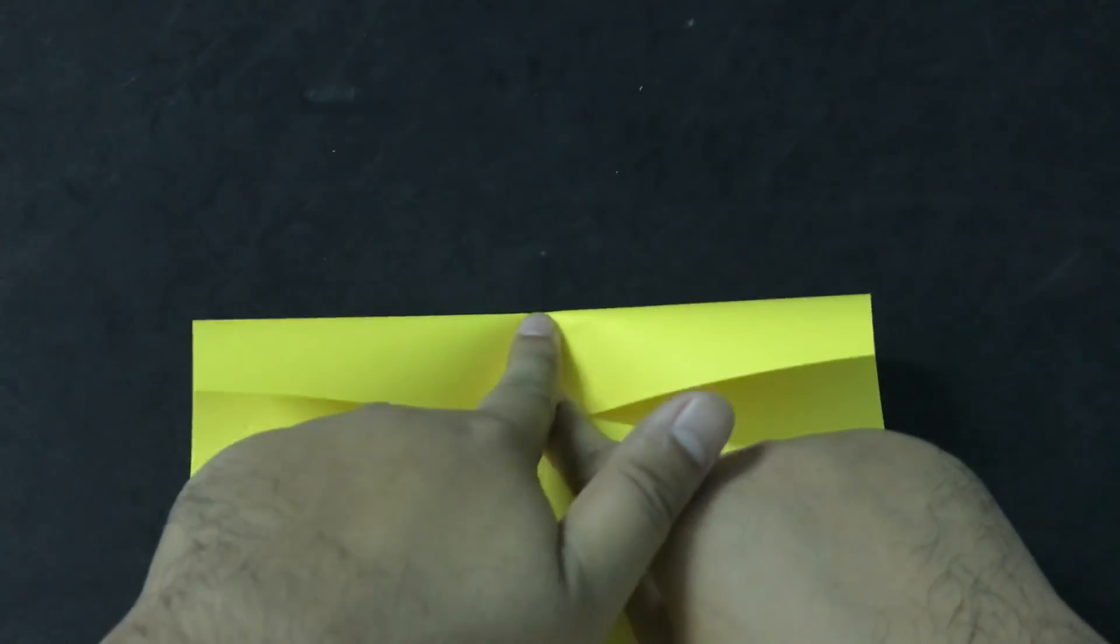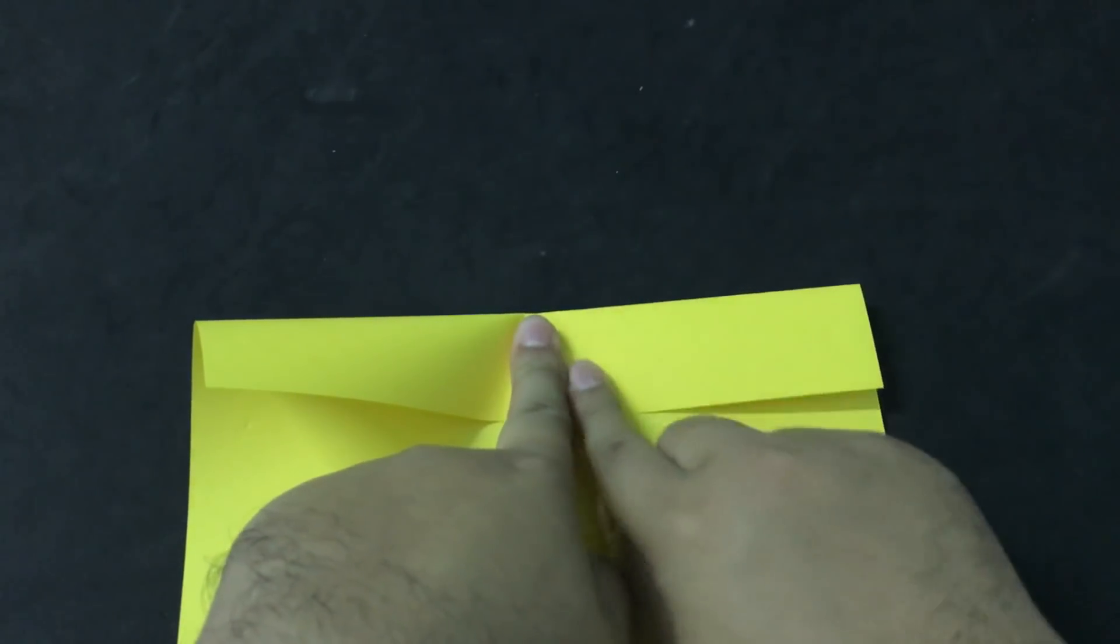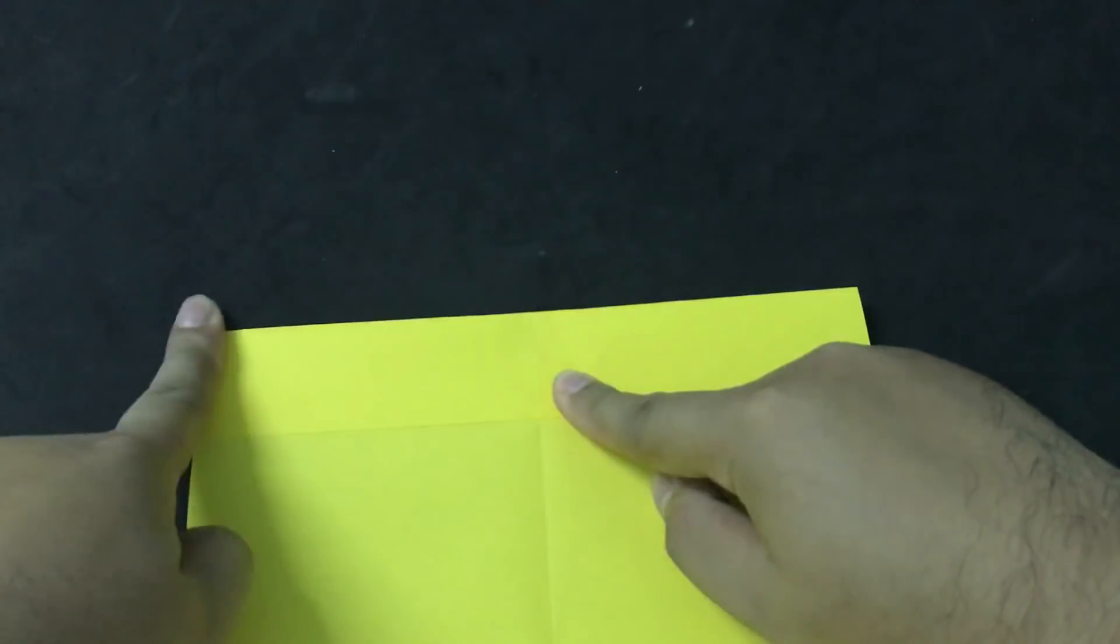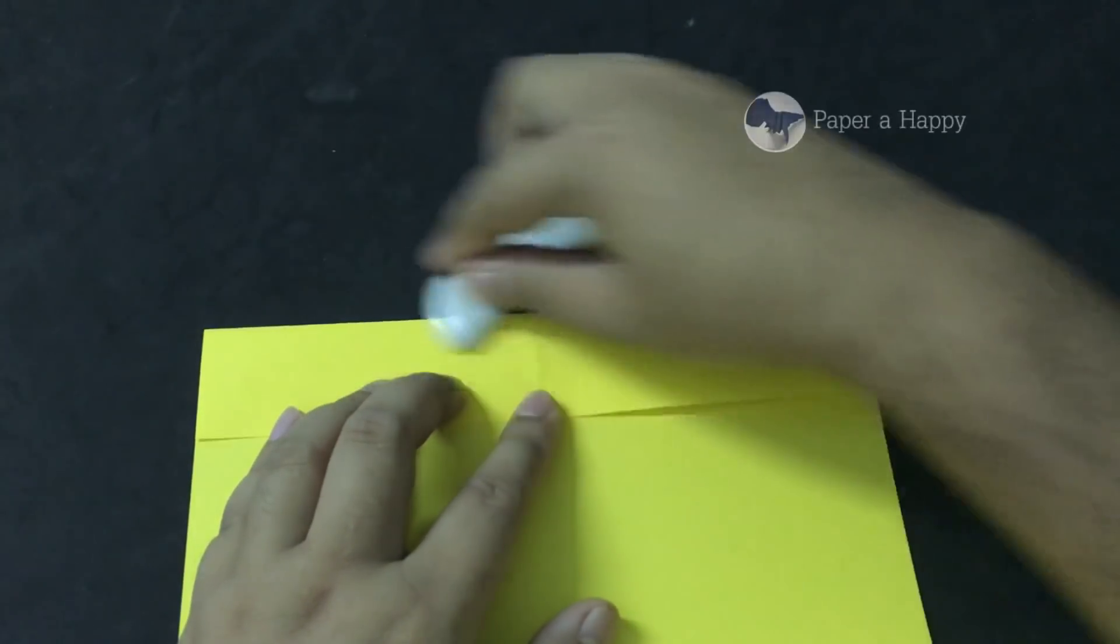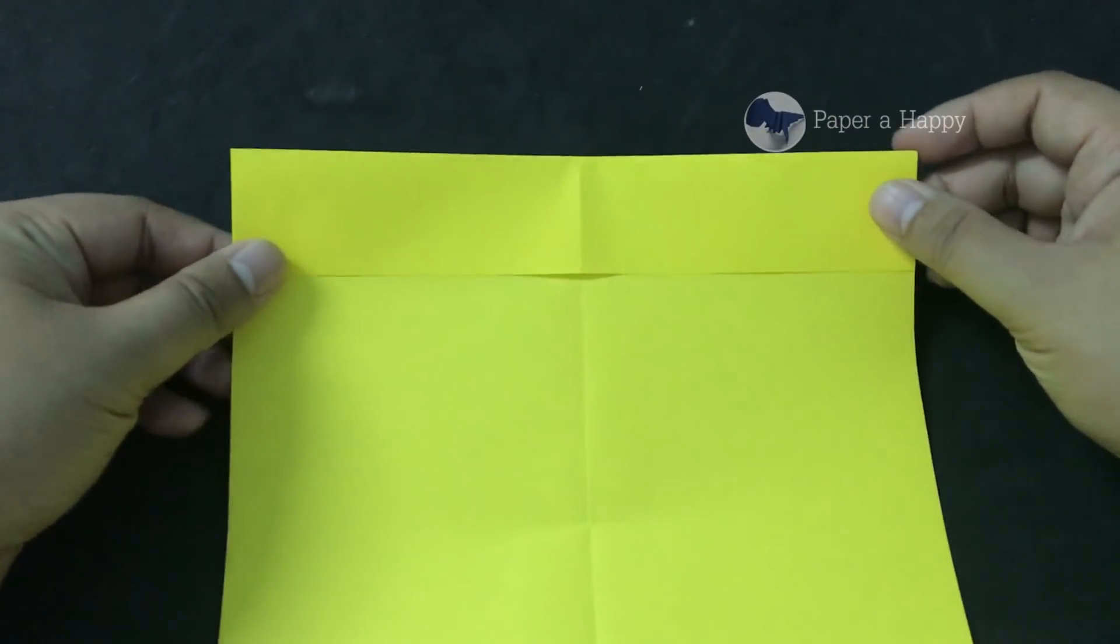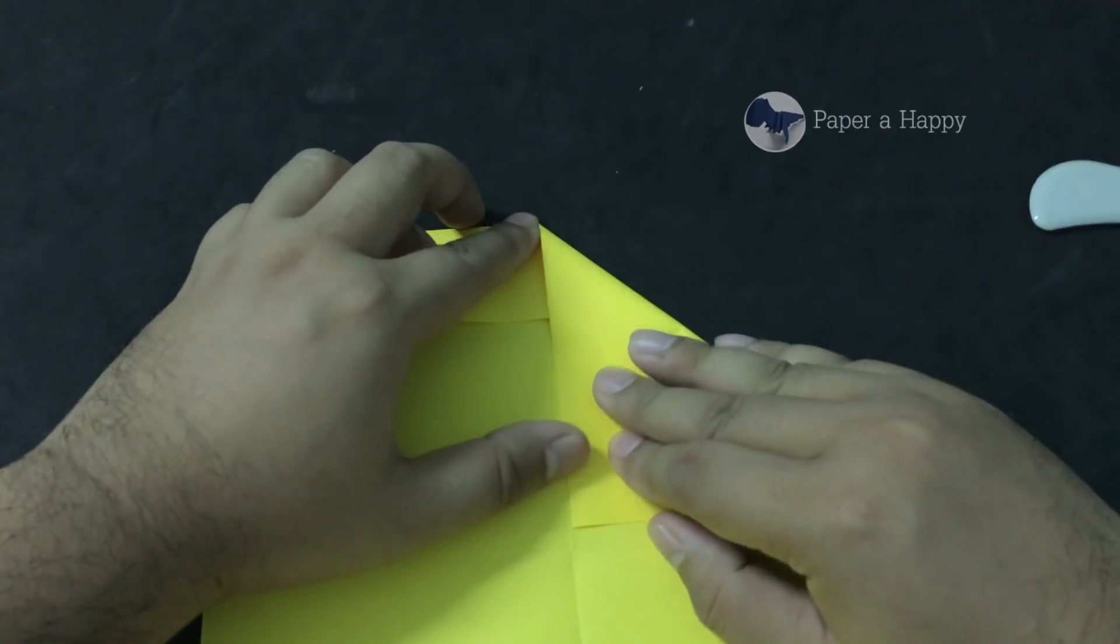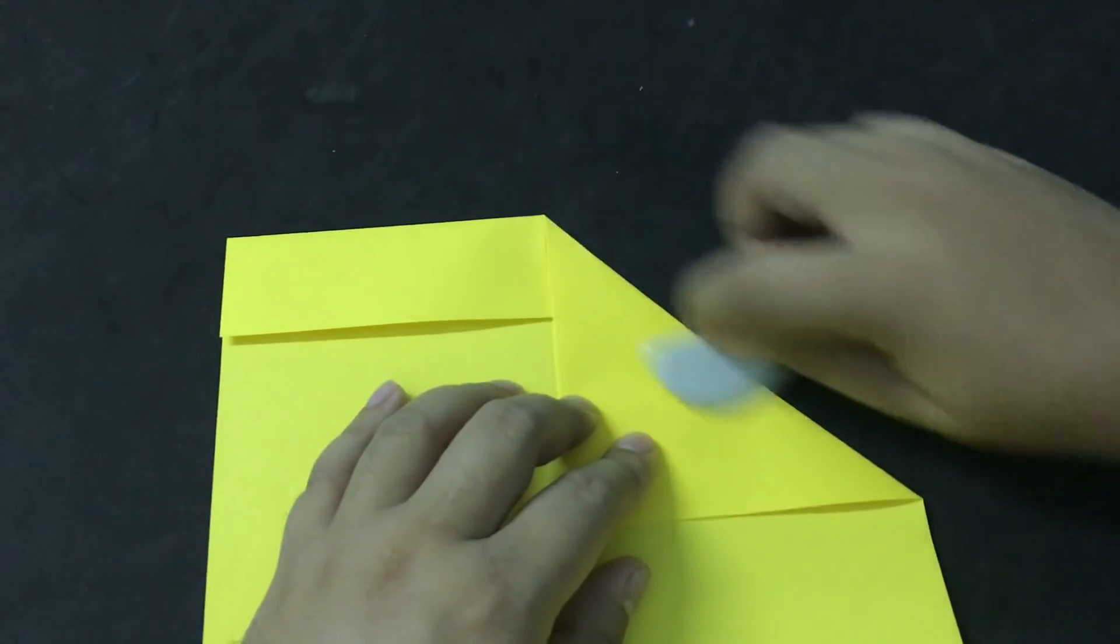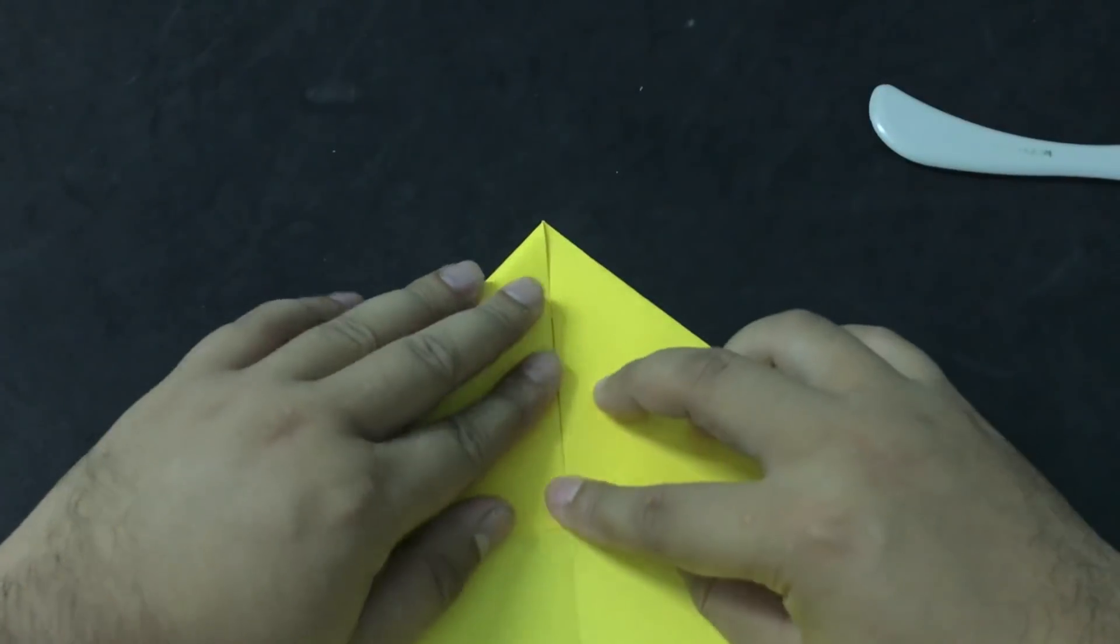This is the instructional video. We will break down the material so we will cut the material. Now we will cut the material 3p to 30p. This is the bottom line. I'll show you the bottom line.